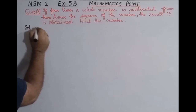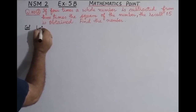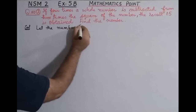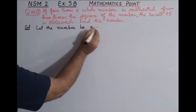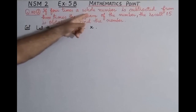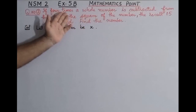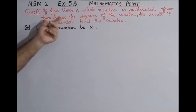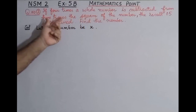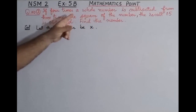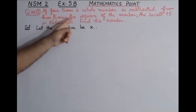First we are going to find the number. Let the number be x. According to the given condition, if four times a whole number — four times x — is subtracted from three times the square of the number...